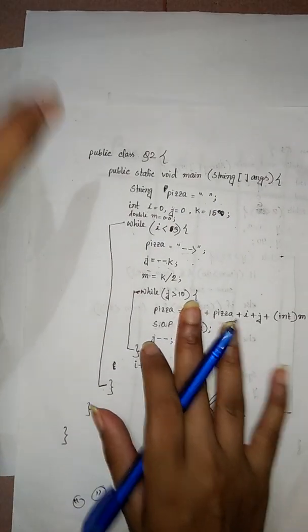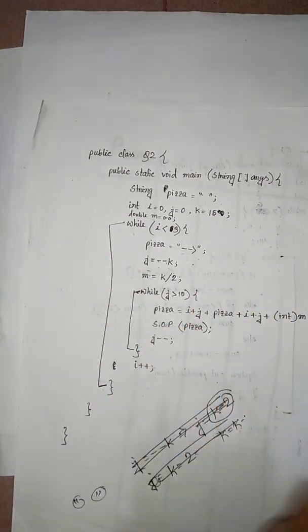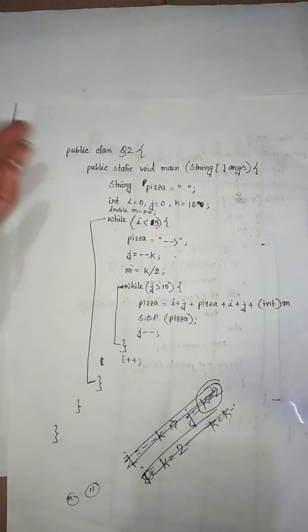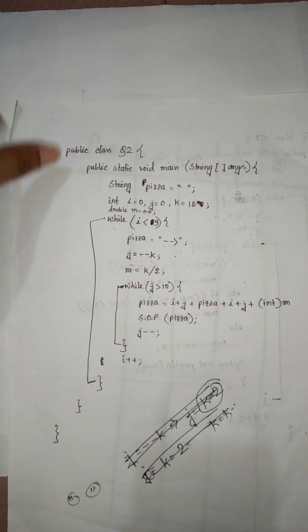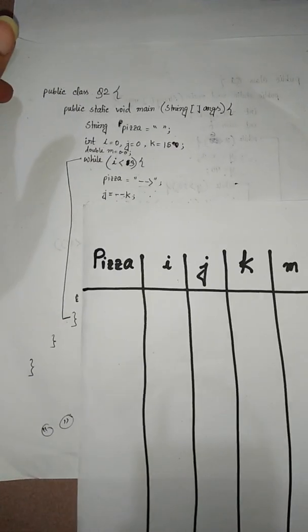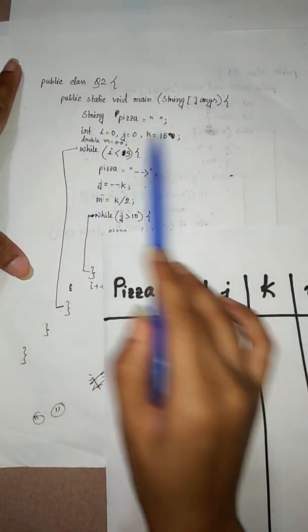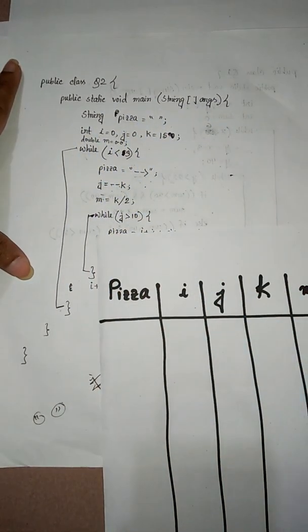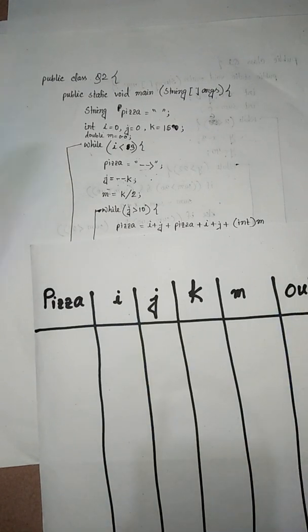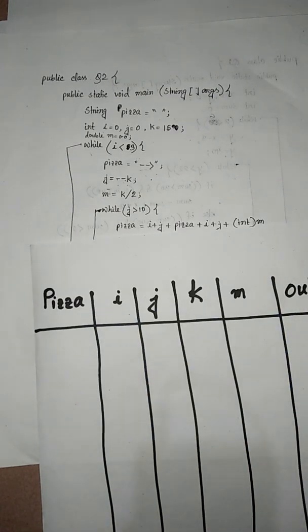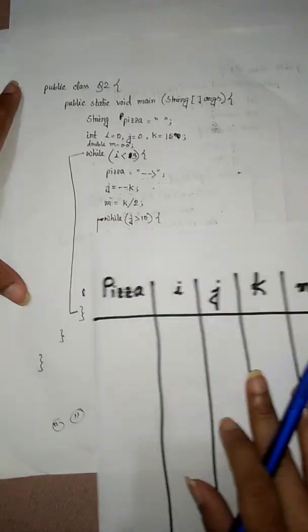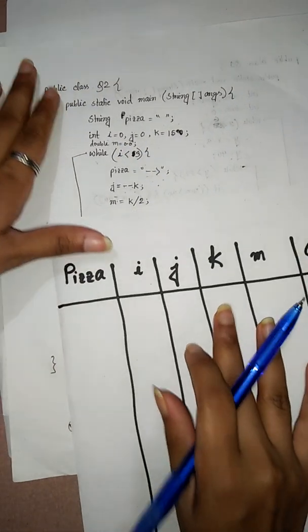Here is a question. What should I do in the first question? I am going to go through and take a variable. The variable will create a table. Here I am going through and we will see — pizza is a variable. So, I am going to create a table. First, we will do initialization.